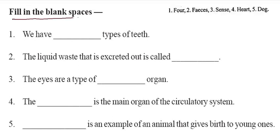Now, fill in the blanks. We have types of teeth — humans can have four types of teeth. There are two of each kind — so four.